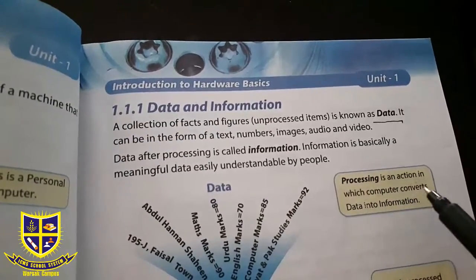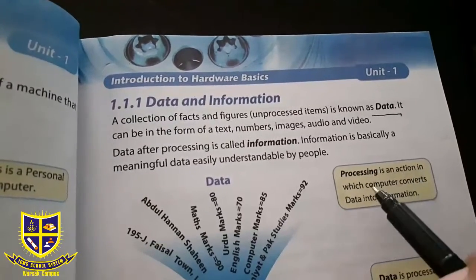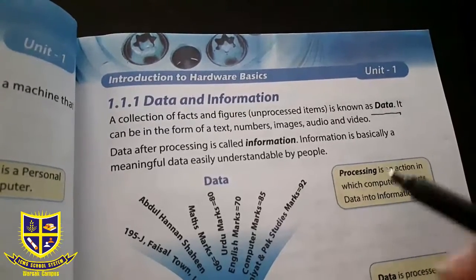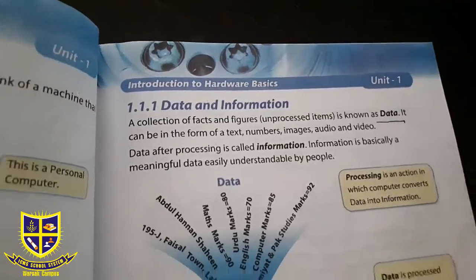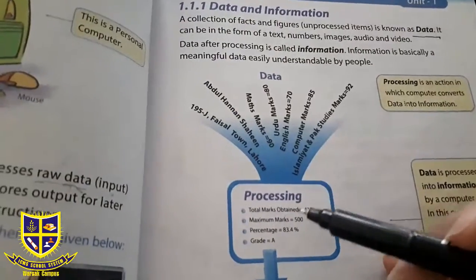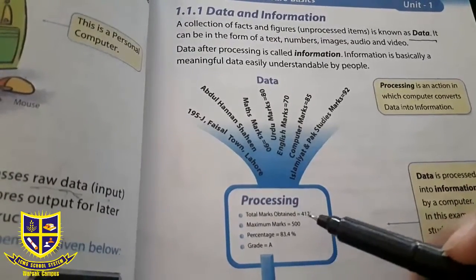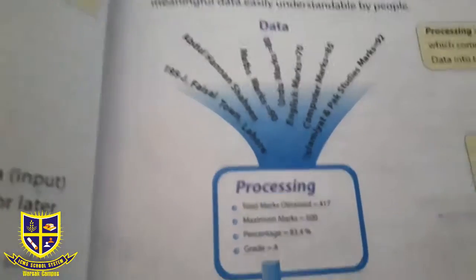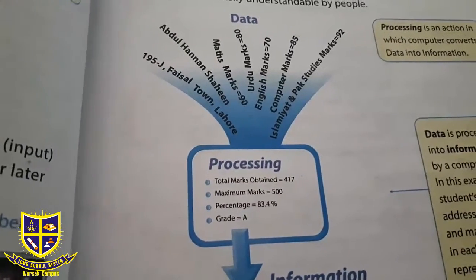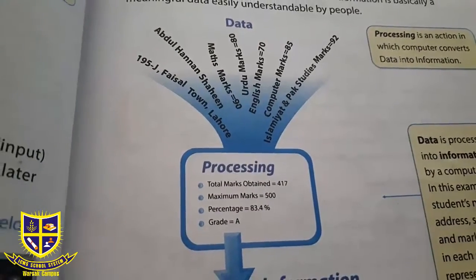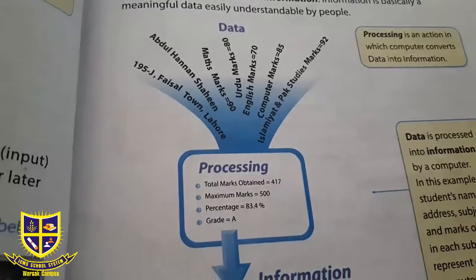Processing is an action in which computer converts data into information. Processing किसे कहते हैं? यह action होता है जो through computer convert होता है — आप एक चीज़ data देते हैं, वो information बन जाती है। For example, a student's total obtained marks are equal to 417.